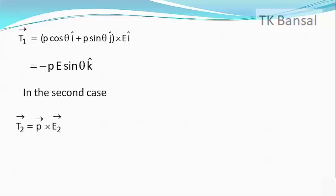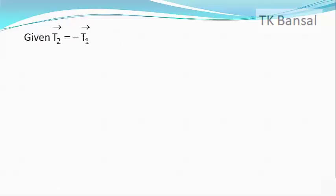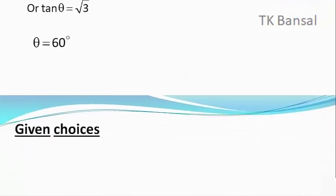In the second case, T₂ = (P cosθ î + P sinθ ĵ) × (√3 E ĵ) = √3 PE cosθ k̂. Given T₂ = −T₁, we get √3 PE cosθ k̂ = PE sinθ k̂, which simplifies to tanθ = √3, giving θ = 60°. Our answer matches with option A.